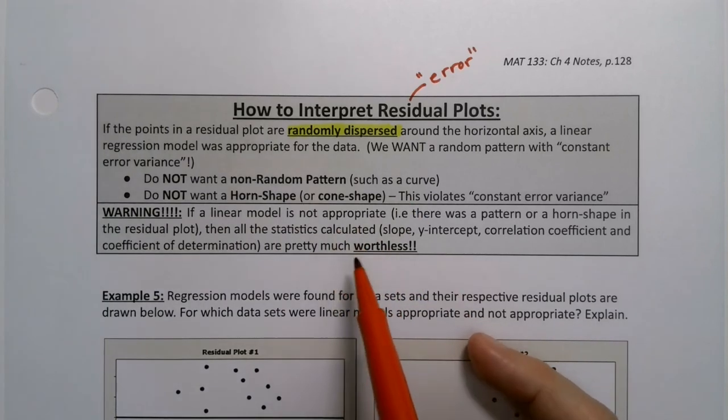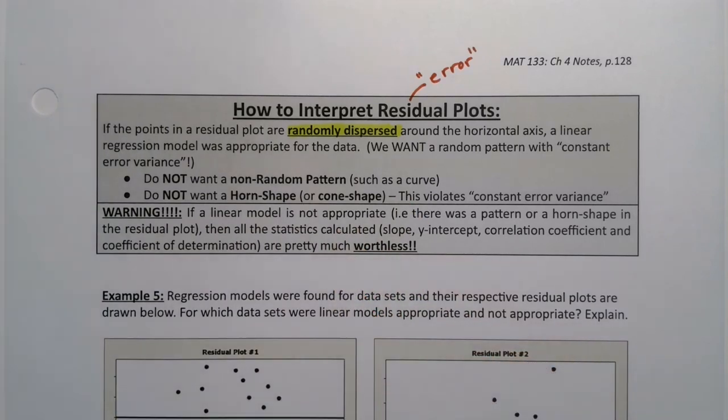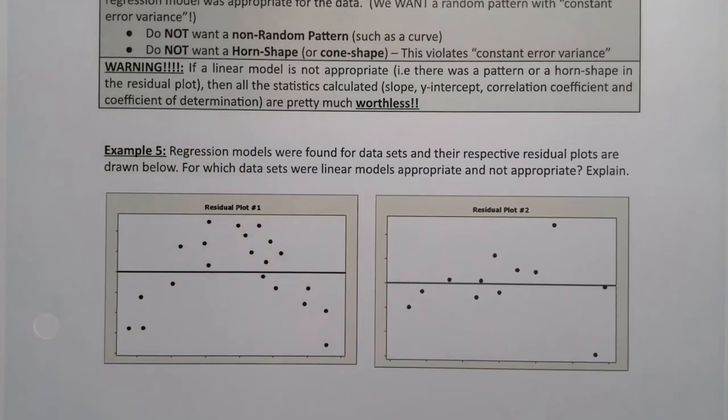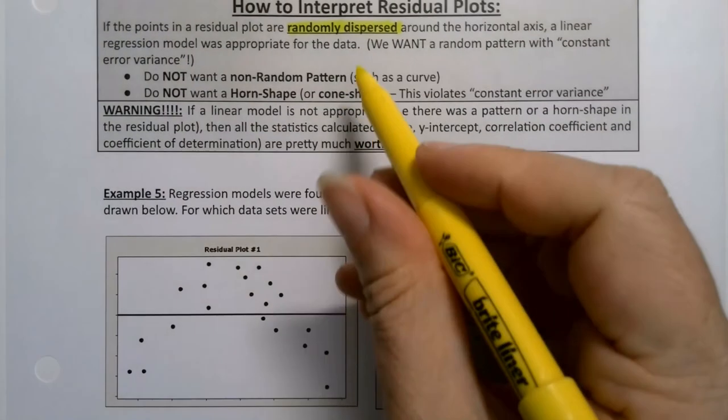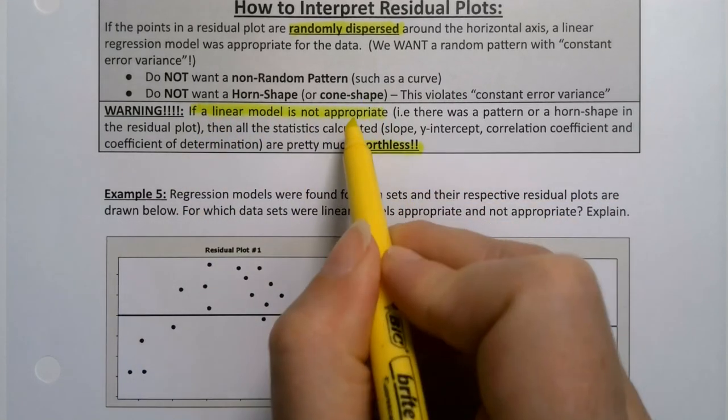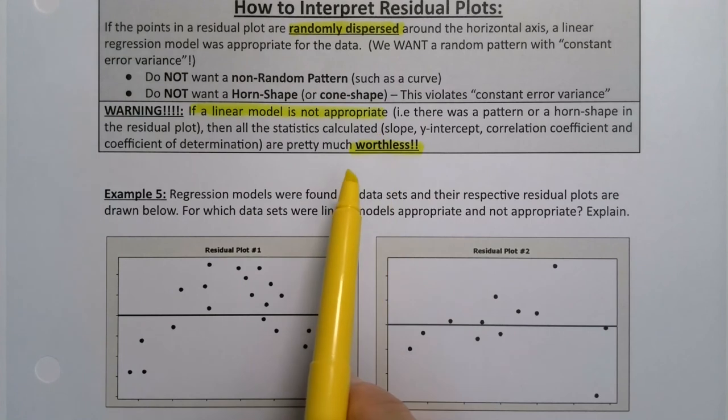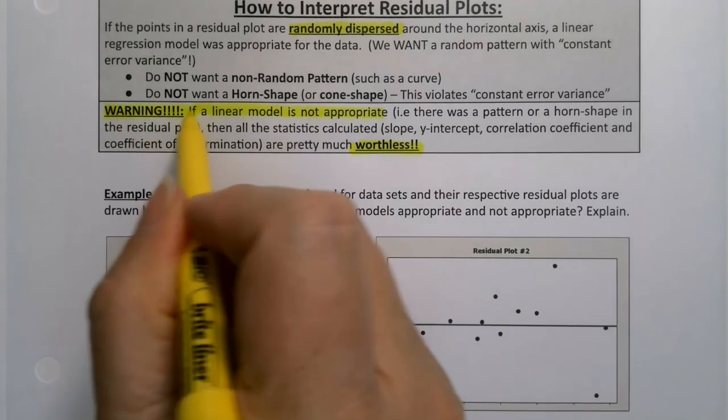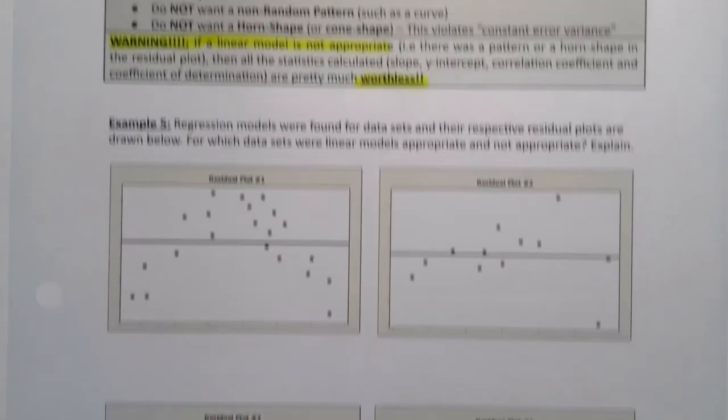Now, if you find that the linear model was inappropriate. If you find that your residual plot has a pattern to it. For example, this one. It has a pattern. That means that everything that you built. The slope, the y-intercept, the correlation coefficient. All of it. Is all worthless. All of it. It means nothing. If it was not appropriate to use a linear model. If the residual plot shows you you should not use a linear model. Then all those other calculations are meaningless. They're worthless.